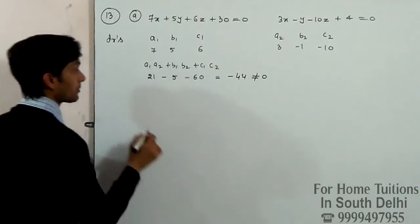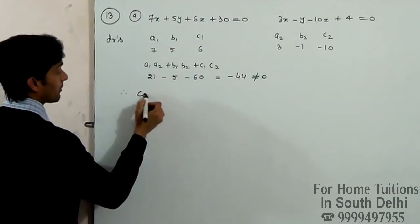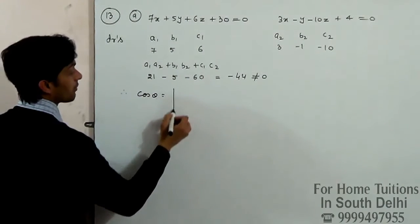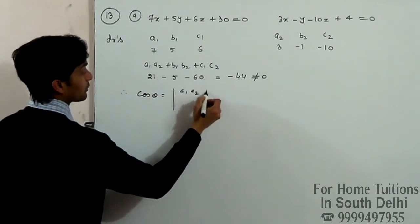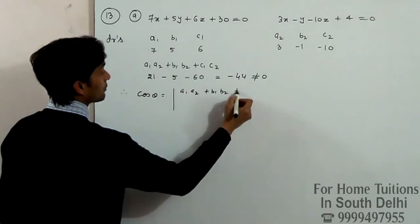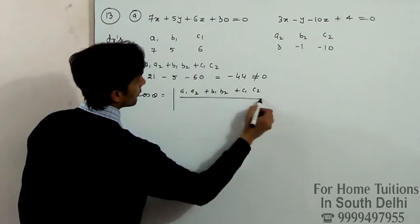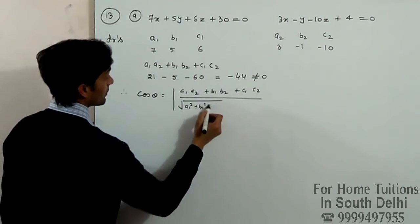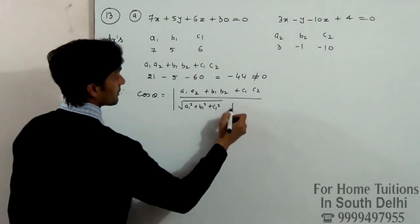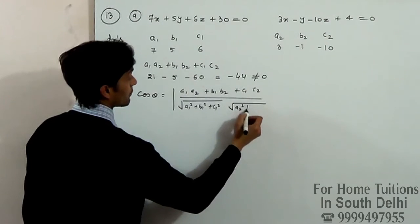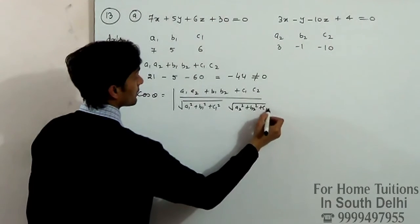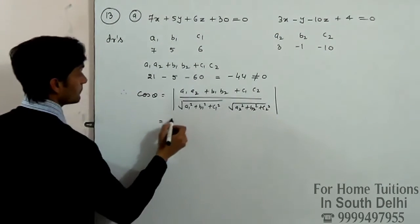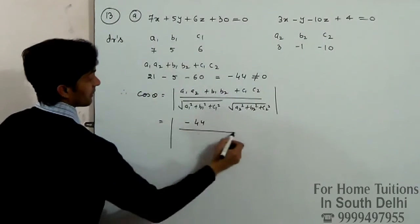This is cos theta. Cos theta is a formula: A1*A2 + B1*B2 + C1*C2, divided by square root of A1² + B1² + C1² times square root of A2² + B2² + C2².